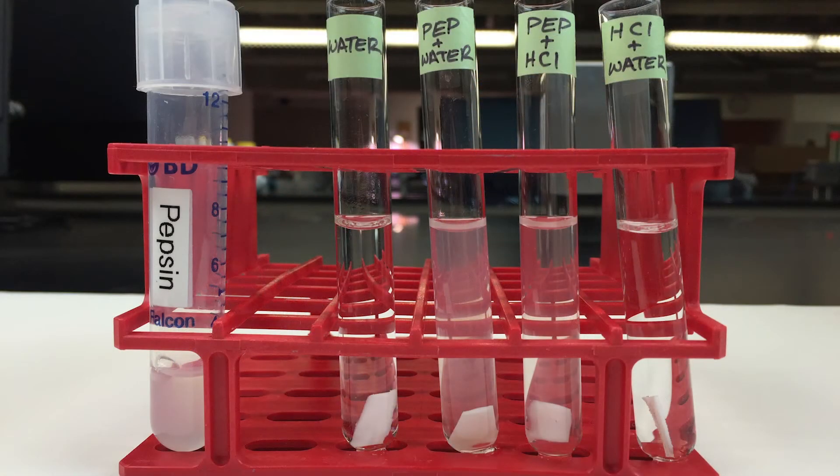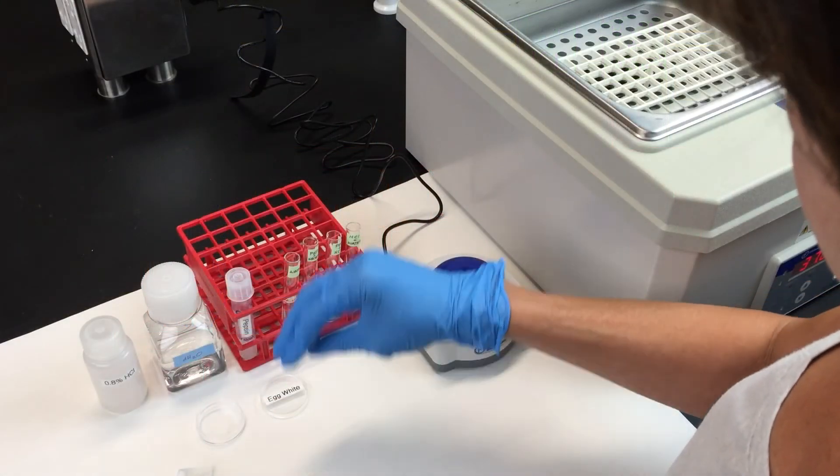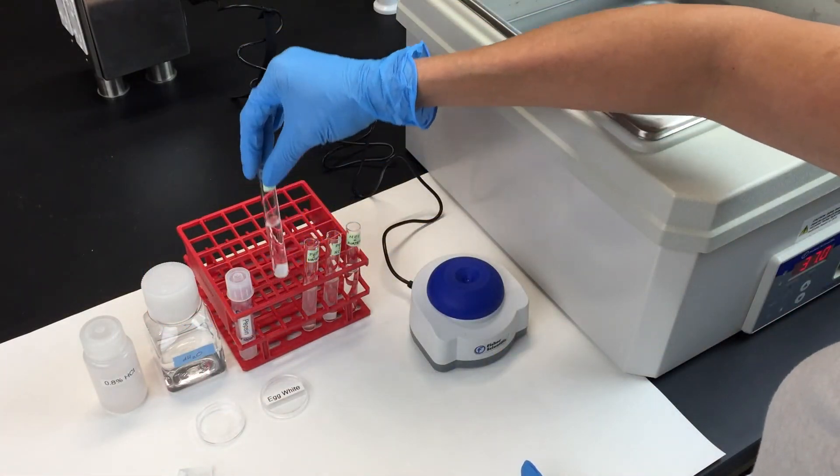Here's what your tubes should look like: the liquid is all at the same level and the egg white is sitting at the bottom of the tube. Now place the tubes in the 37-degree water bath for 90 minutes.